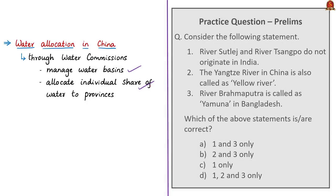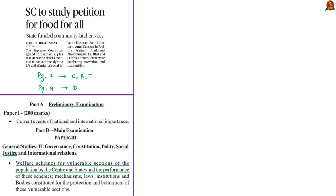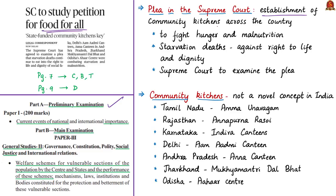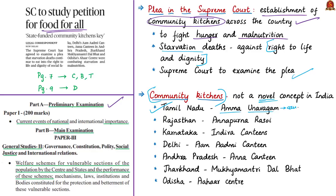The next article is about food for all. A group of activists filed a plea in the Supreme Court of India seeking establishment of community kitchens across the country to combat hunger and malnutrition, arguing that starvation deaths violate the right to life and dignity. The petitioners cited Tamil Nadu's Amma Unavagam — involving self-help groups employing the poor to serve hygienic food at cheaper prices — as a successful example of a state-funded community kitchen.